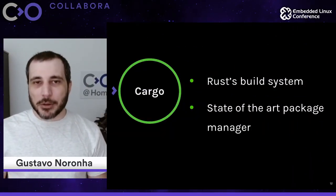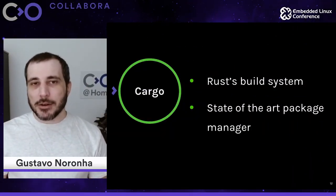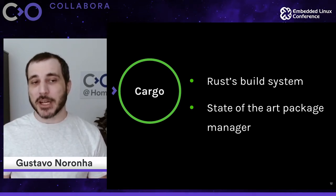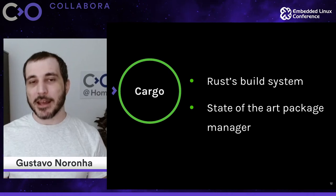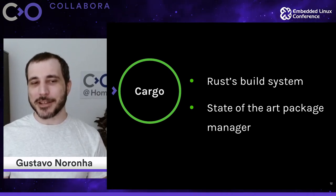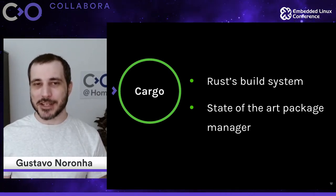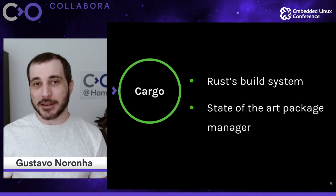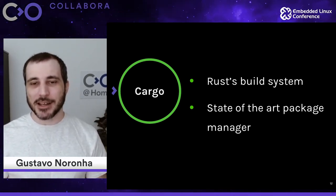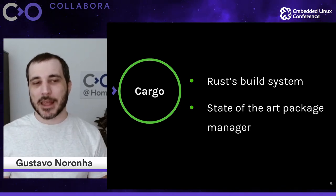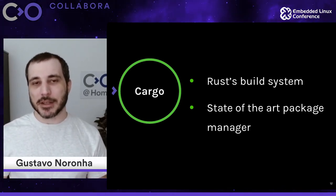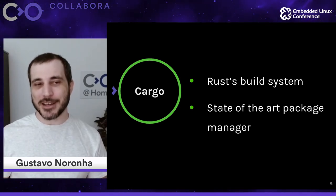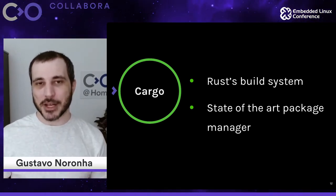Now let's talk a little bit about Cargo. Cargo is the Rust build system — not the compiler, but its build system. It's also a state-of-the-art package manager, so you can use it to install Rust tools like Bat, which is a cat replacement, into your system. As we'll see in the next slides, Cargo is very focused on Rust code itself.